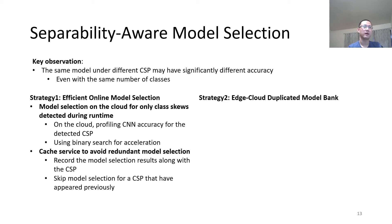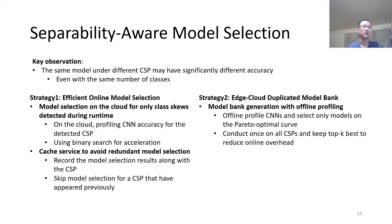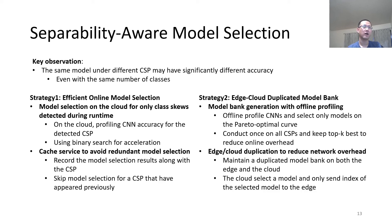The second strategy is an edge-cloud duplicated model bank. We generate our model bank with offline profiling. Once we have done this offline profiling, we select only models on the Pareto optimal curve, so we have a smaller search space during online and reduce the effort during runtime. This procedure is conducted once on all class skew profiles, and we keep the top K bests to reduce the online overhead. We also have an edge-cloud duplication to reduce network overhead. We maintain a duplicated model bank on both the edge and the cloud. The cloud selects a model and only sends the index of the selected model to the edge, so we can minimize the network overhead.